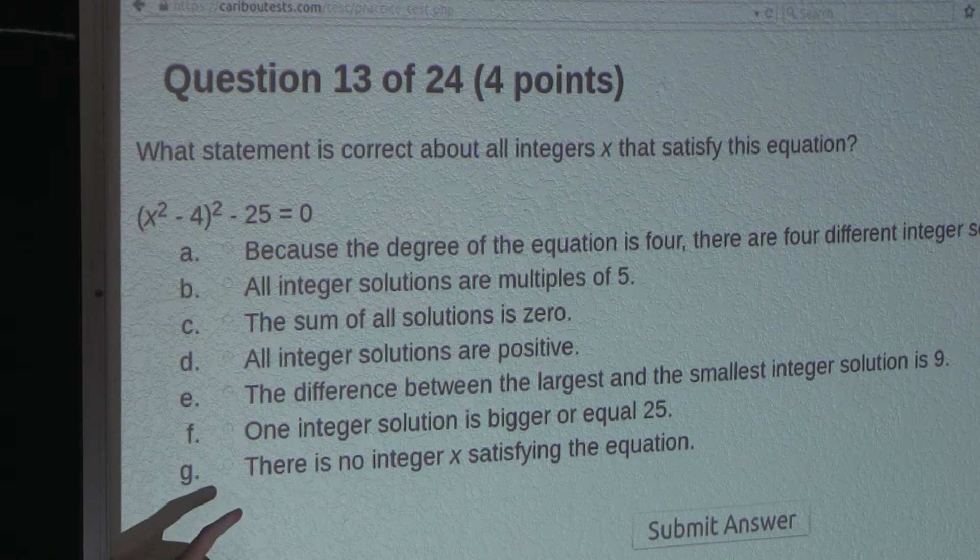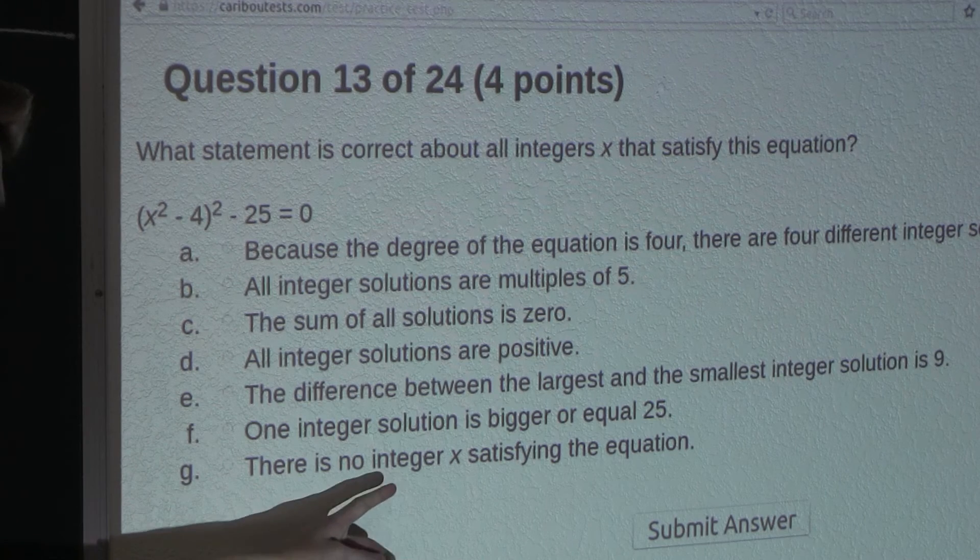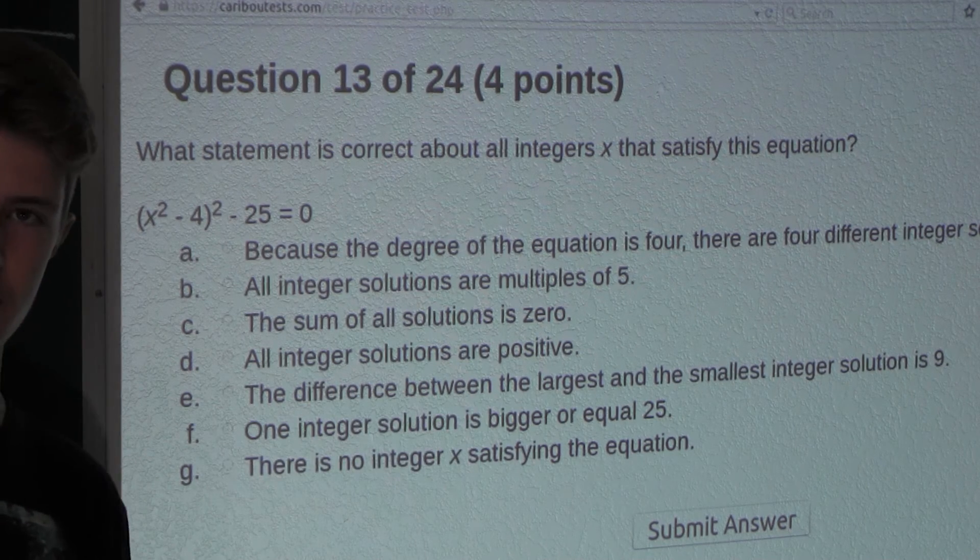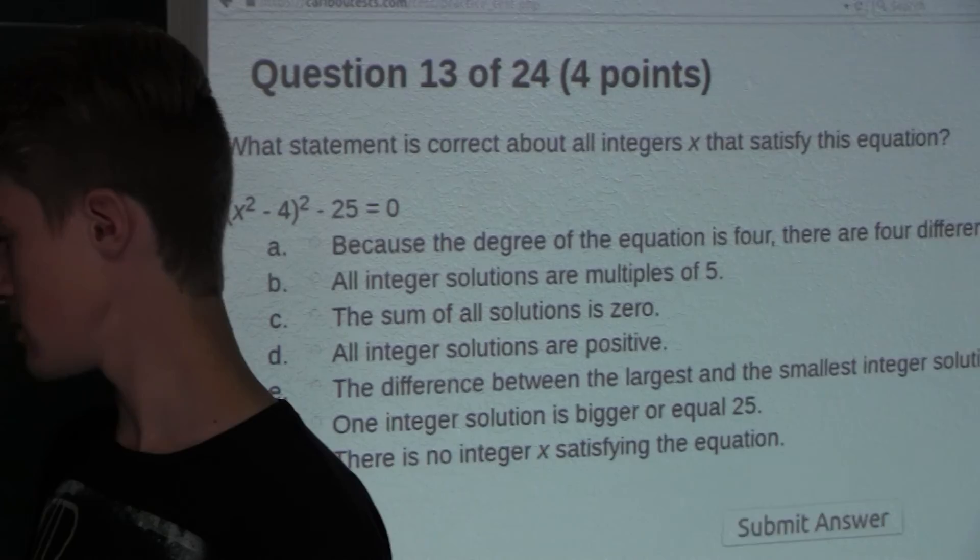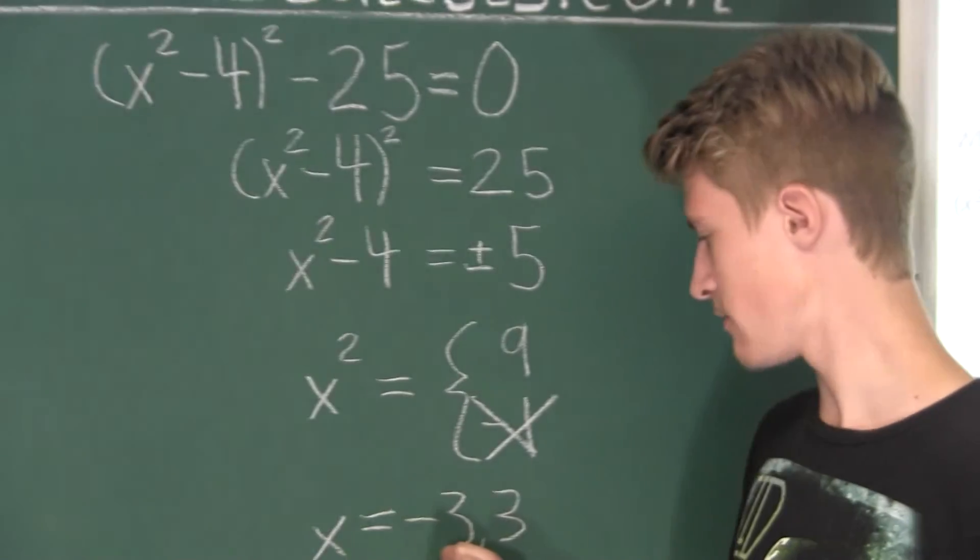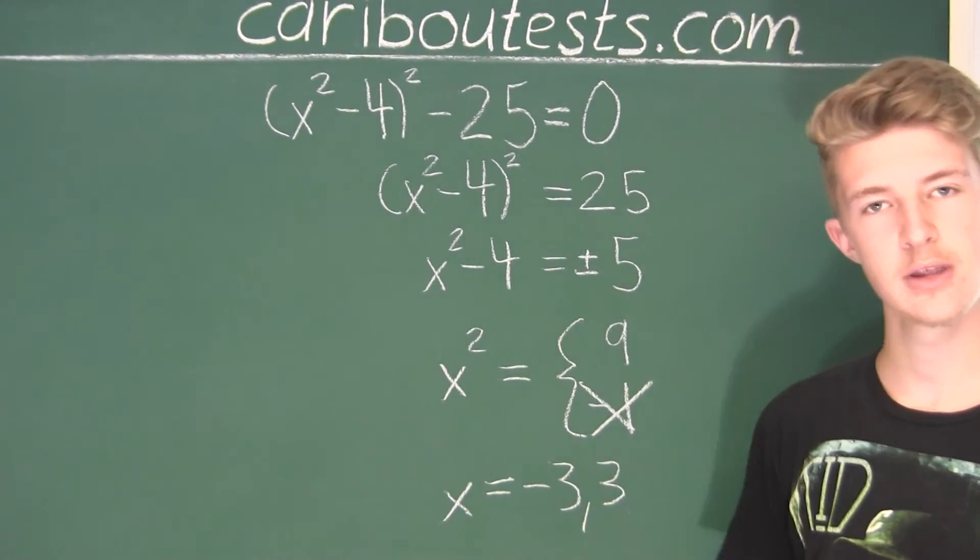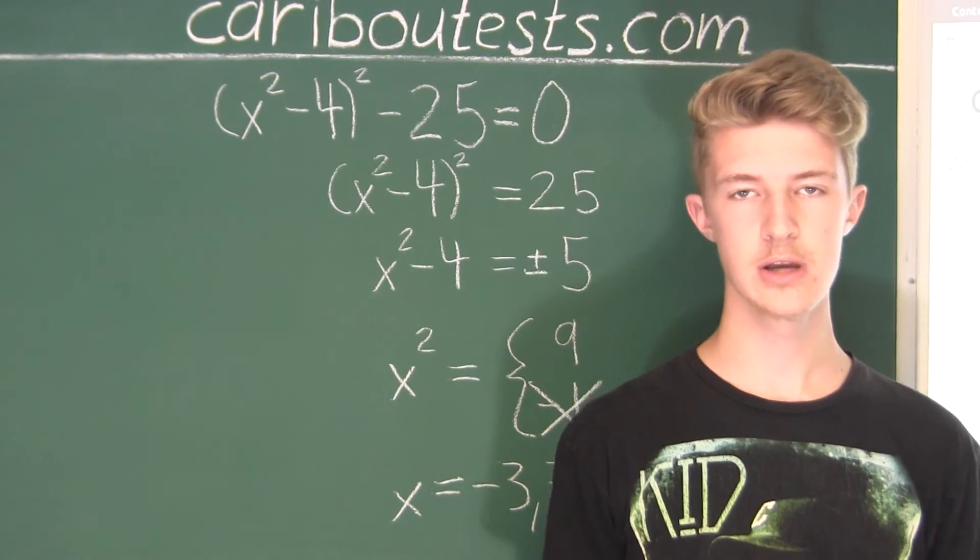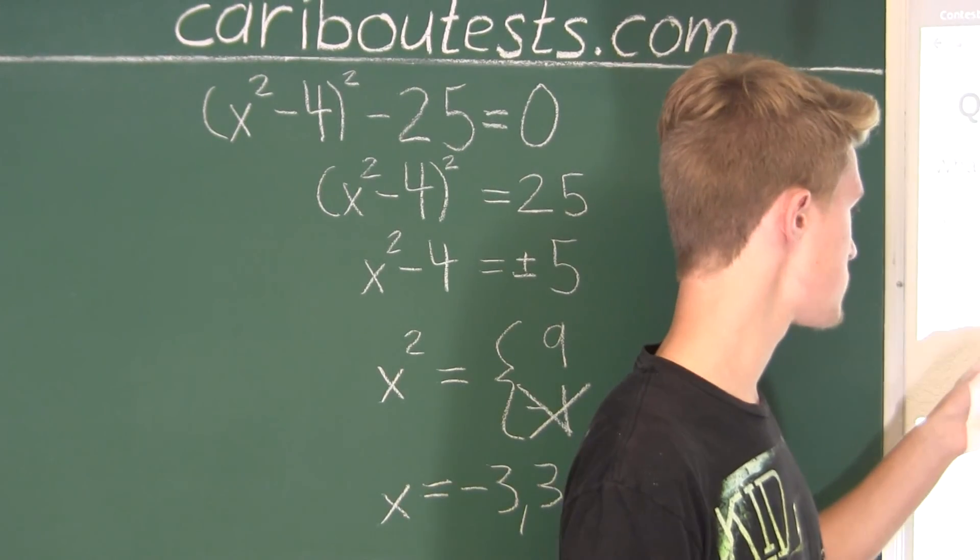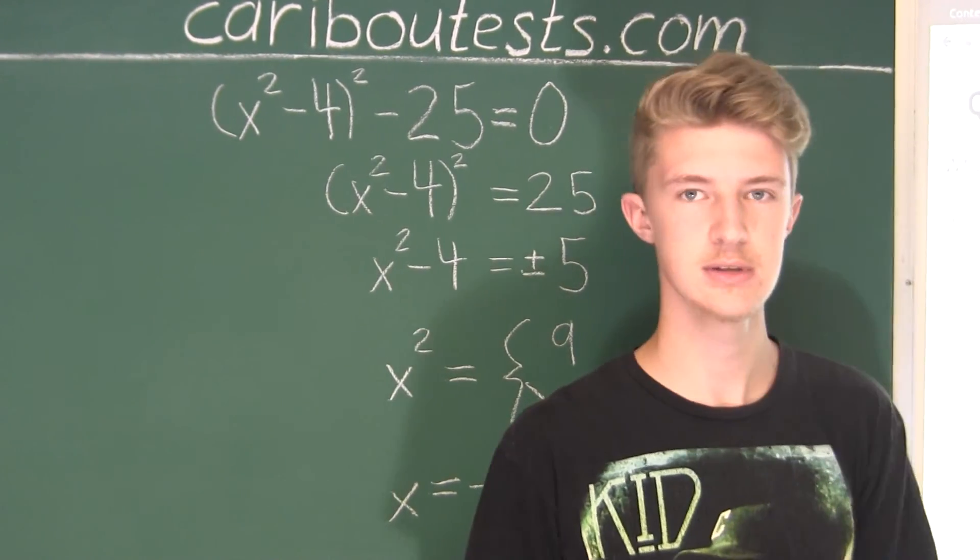And finally, option G: There is no integer x satisfying the equation. Well, that's also false because we have two solutions, which are negative 3 and 3. So therefore, we know that the one and only correct option is option C. The sum of all solutions is zero.